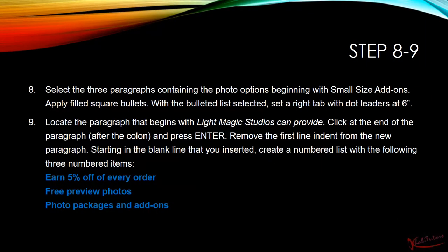In this session, we are going to focus on step number 8 and step number 9. Step number 8 reads as follows: select the three paragraphs containing the photo options beginning with small size add-ons. Apply filled square bullets with the bulleted list selected. Set a right tab with dot leaders at 6 inches.